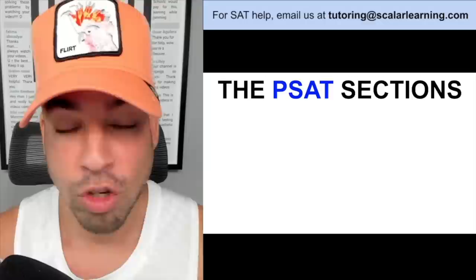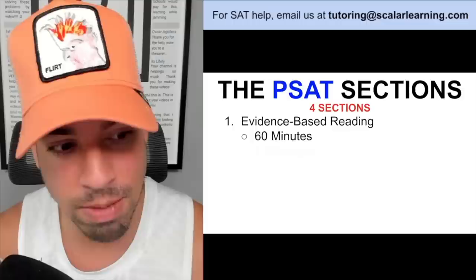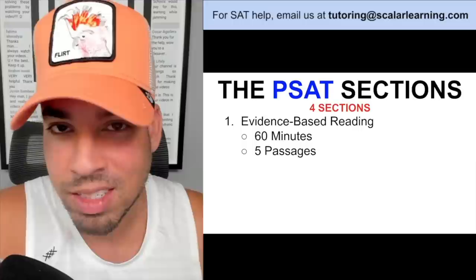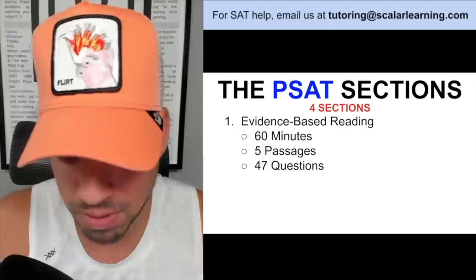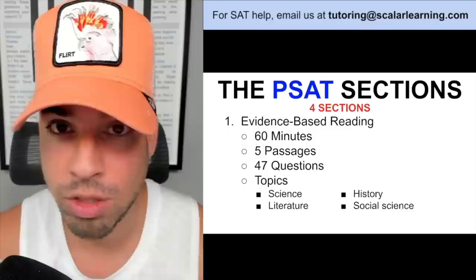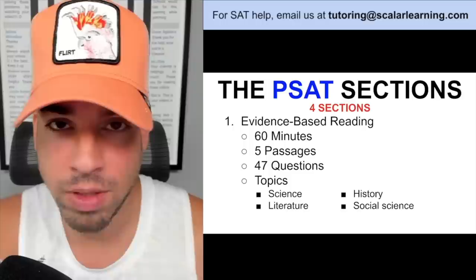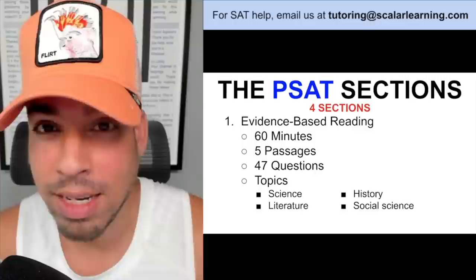There are four sections on the PSAT. The first is evidence-based reading, which spans 60 minutes with five passages and 47 questions total — roughly nine to ten questions per passage. Topics covered include science, literature, history, and social science. No prior knowledge is required; all information is in the passage. The reading section is about mining for information, analyzing graphs, and deciphering scientific information.